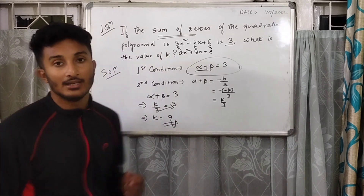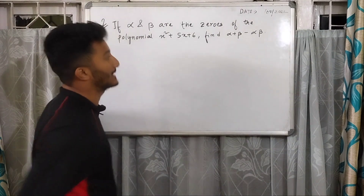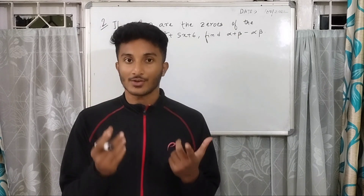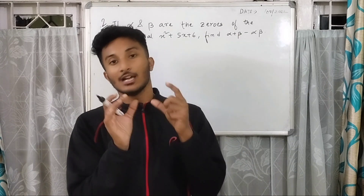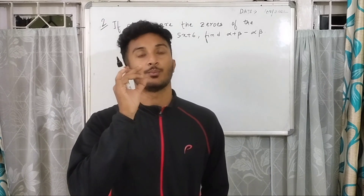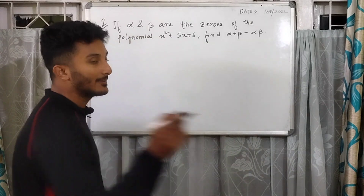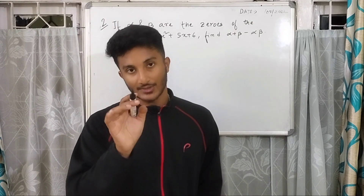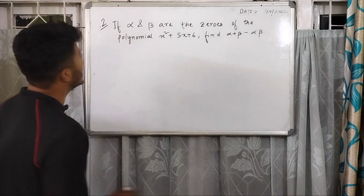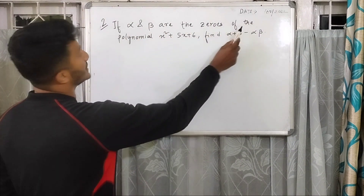All these types of questions are confined to the sum of zeros and the product of zeros of the polynomial. We need to be very sure about these two concepts. Now we will do another type of question: if alpha and beta are the zeros of the polynomial x² + 5x + 6, we have to find alpha plus beta minus alpha beta.